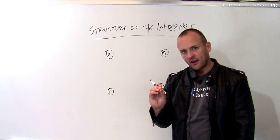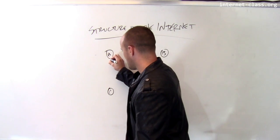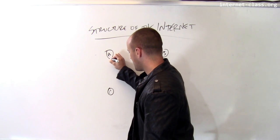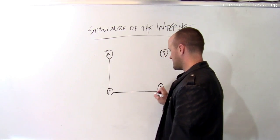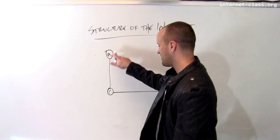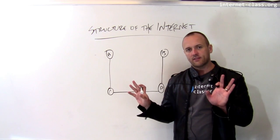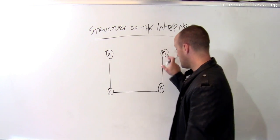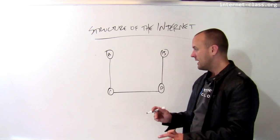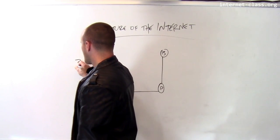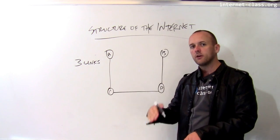The cheapest way to connect these computers together — using the smallest number of links — is to connect them like this. If I establish a connection between A and C, then A can communicate with C. If I establish a connection between C and D, then A can communicate with C and D. Establishing one final connection makes this network fully connected. All nodes can communicate with each other by transmitting through intermediate nodes. This fully connected network uses just three links.